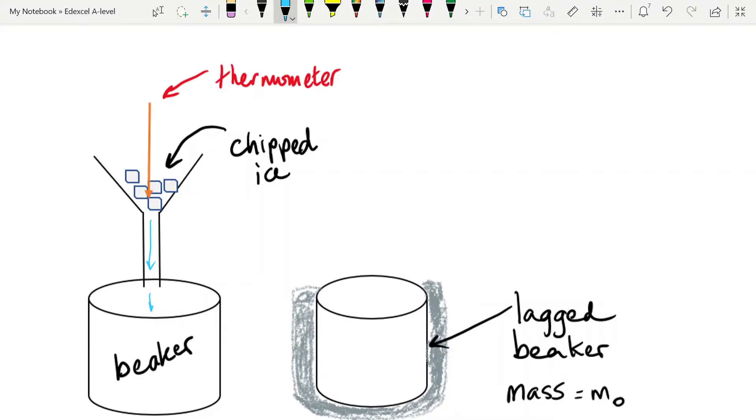In the meantime, you're preparing another beaker, a lagged beaker like this, and you measure its mass. M0 is what we're calling that. And Excel suggests you make a risk assessment for this. In handling ice straight out of the freezer, you could get freezer burns from this. Obviously, you've got water, so you need to be careful about spillages and mopping them up in case somebody slips. But really, again, like I've said before, in an experiment like this, you are kind of scrabbling around trying to find a hazard that you could use for a risk assessment.